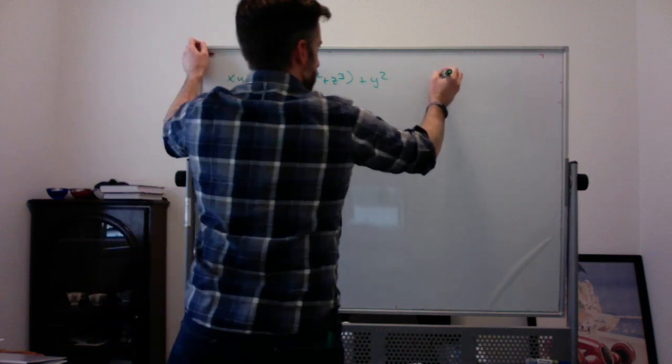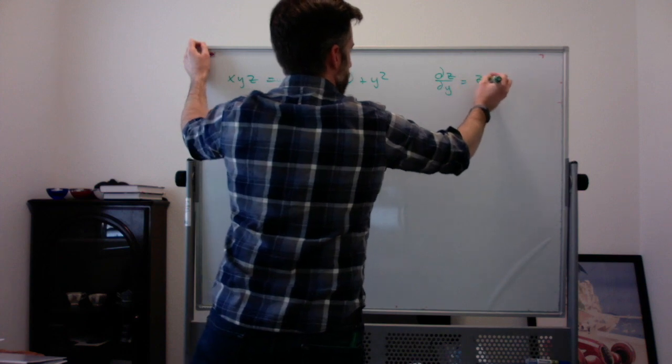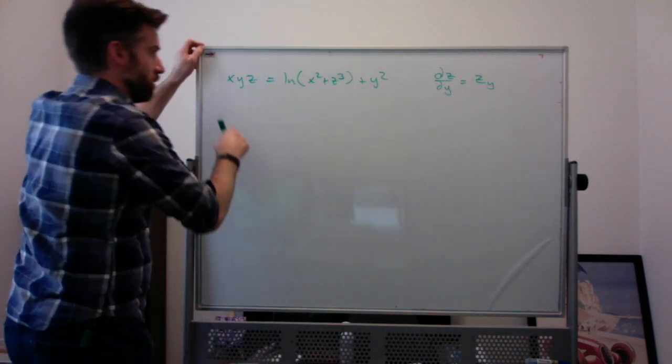Now we're going to try and find ∂z/∂y, which is zy. So, taking the partial with respect to y.